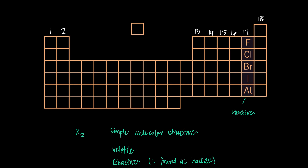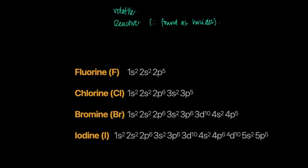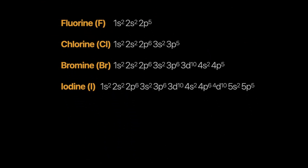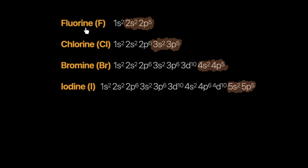Next, at the atomic level, we look at their electronic configurations. Because they are in the same group, they have similar configurations. For example: fluorine ends in 2p⁵, chlorine in 3p⁵, bromine in 4p⁵, and iodine in 5p⁵. The outermost shell is always s²p⁵. So fluorine (2nd period) is 2s²2p⁵, chlorine (3rd period) is 3s²3p⁵, bromine (4th period) is 4s²4p⁵, iodine (5th period) is 5s²5p⁵, and astatine (6th period) ends in 6s²6p⁵.